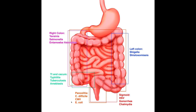In terms of affecting the entire colon, that's called pancolitis, and that would be Clostridium difficile — C. diff, as it's commonly referred to in medical jargon — CMV, which is a virus, and E. coli. These three organisms are known to affect the entire colon.